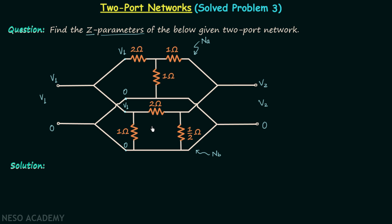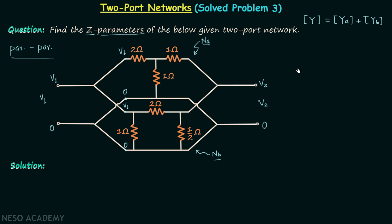Following the same process for the output terminals, we find a parallel connection there as well. Therefore, we have a parallel-parallel interconnection of two two-port networks. We know that the Y parameters matrix of the larger network equals the Y parameters matrix of network NA plus the Y parameters matrix of network NB in the case of parallel-parallel interconnection. We will calculate matrix YA and matrix YB, add them to get matrix Y, and then convert to obtain the Z parameters matrix.